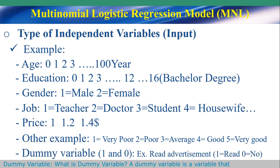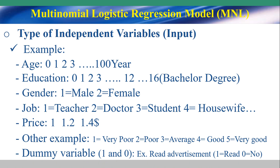The dummy variable — what is the dummy variable? The dummy variable is a variable that takes a value of 0 and 1, where the value indicates the presence or absence of something. Number 1 represents having read the advertisement, and 0 means did not read the advertisement.